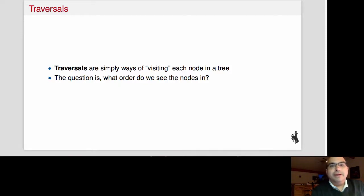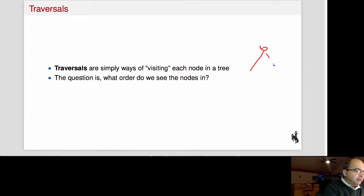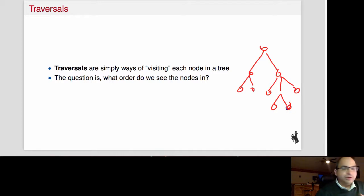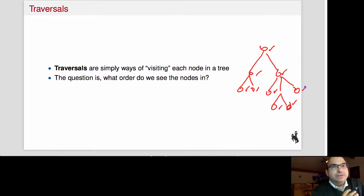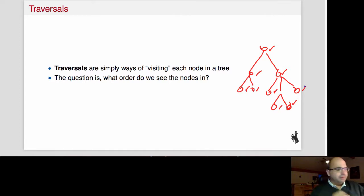I want to talk about traversals. A traversal is just a way to visit each of the elements in a tree. For example, I might have this tree here with some nodes and some leaves, and I want to go to each one of them. What does 'visit' mean? Whatever we want it to mean — maybe it means printing the value of the node, maybe it means adding one to the value. We're going to focus on the actual traversal process.